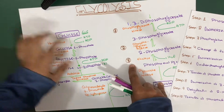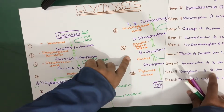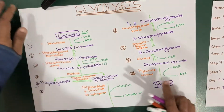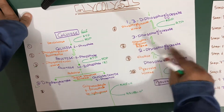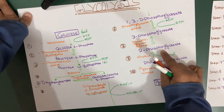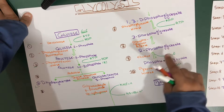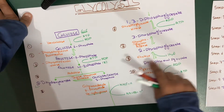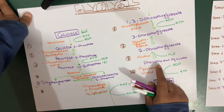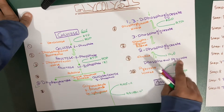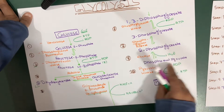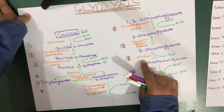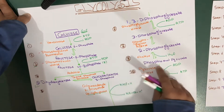Step nine is the dehydration of 2-phosphoglycerate. We remove a water molecule from 2-phosphoglycerate using the enzyme enolase, and the product we get is phosphoenolpyruvate (PEP).